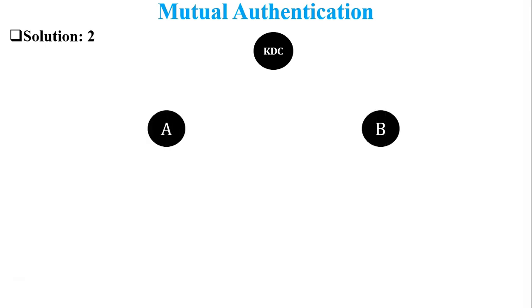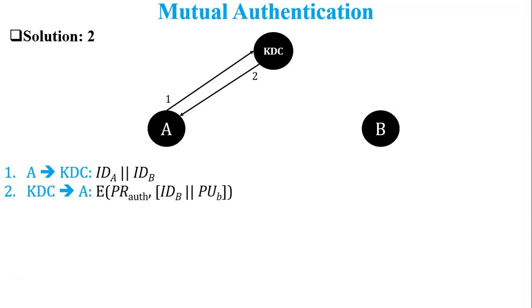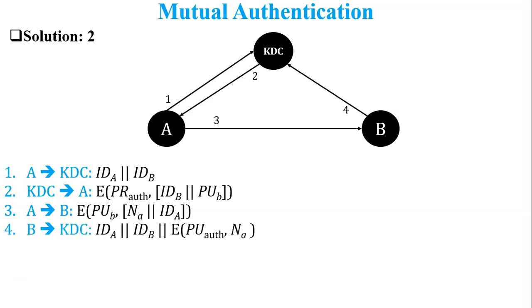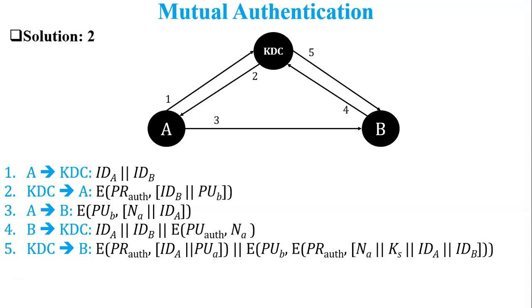In Solution 2, the key distribution center (KDC) generates and distributes the secret key to user A and user B. User A wants to communicate with user B but cannot do so directly due to an authentication issue. So user A sends a request to the KDC for the digital certificate of user B. The KDC sends the requested digital certificate to user A, who decrypts it to get the public key of user B. User A then sends nonce A to user B encrypted using the public key of B. User B decrypts the message and gets nonce A, then sends a request to the KDC for the digital certificate of user A and the session key. The KDC replies with the digital certificate of user A and the session key tied with nonce A. User B decrypts the digital certificate to get the public key of user A.